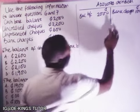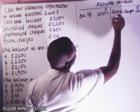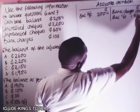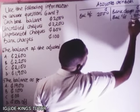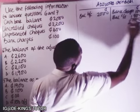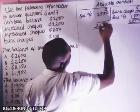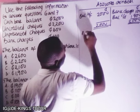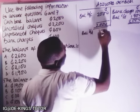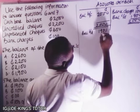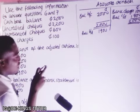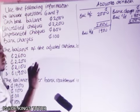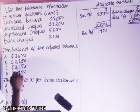The balance carried down is 1,900, so that both sides add up to 2,000. This is then brought down as the balance — 1,900 cedis. So the balance as per the adjusted cash book is 1,900 cedis. The answer to question six is D: 1,900 cedis.